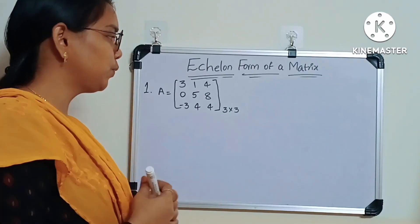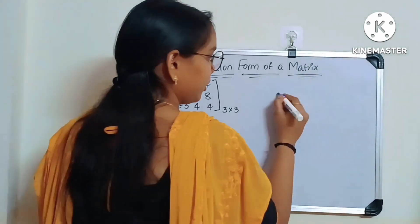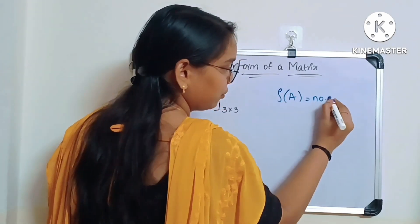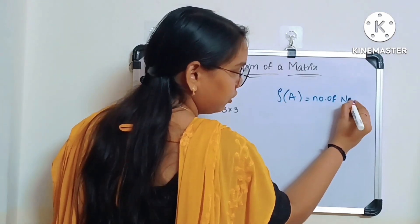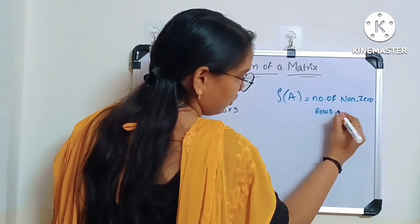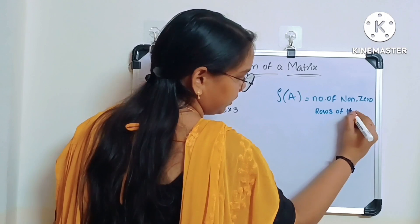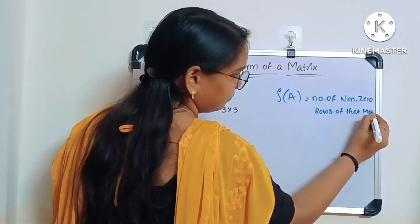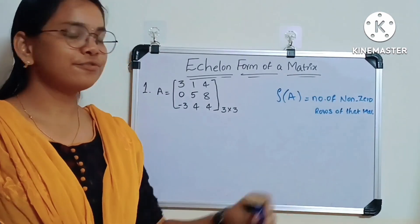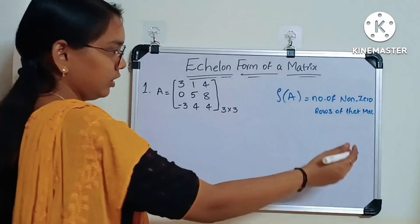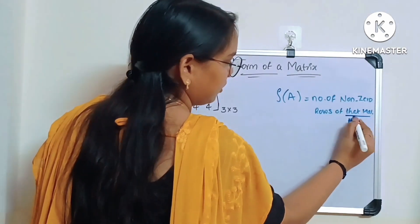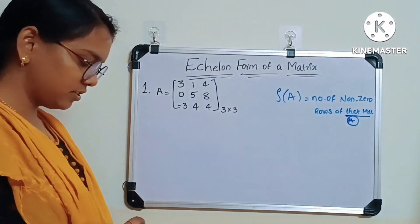The rank of a matrix is equal to the number of nonzero rows of that matrix. This is the definition.